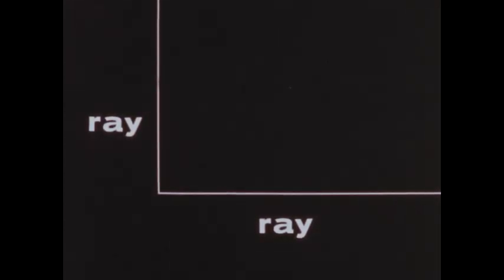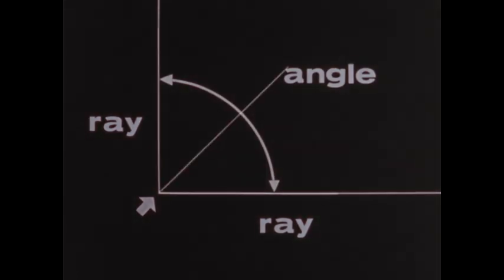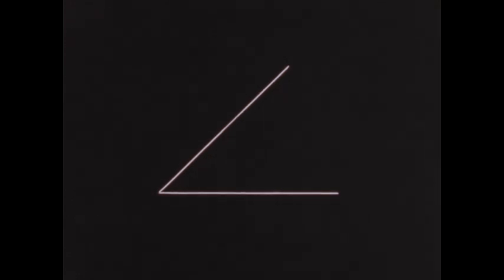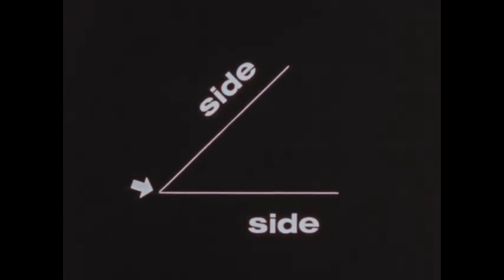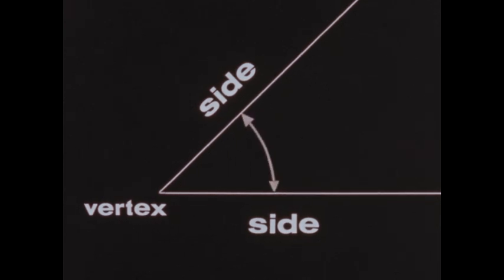Part of a line extending indefinitely in one direction from a point is called a ray. Two rays with a common end point — this is one definition of an angle. On any angle, the rays are called the sides. Their point of meeting is the vertex of the angle. The sides can be extended indefinitely from the vertex, but this will not change the size of an angle. The size of an angle depends only upon the amount of opening between its sides, as we will see by measuring angles.